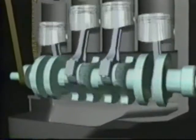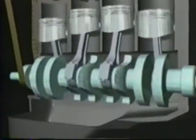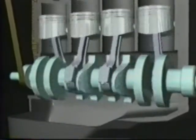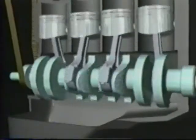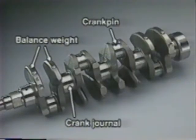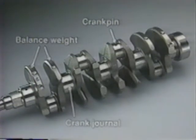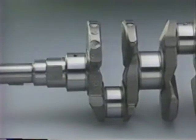The crankshaft converts the linear motion of each piston to rotary motion via the connecting rod. The crankshaft is composed of crank pins, which transmit the piston force to the shaft, crank journals, which govern the rotation of the shaft, and balance weights, which ensure well-balanced rotation of the shaft.